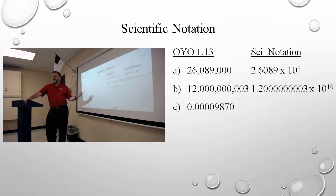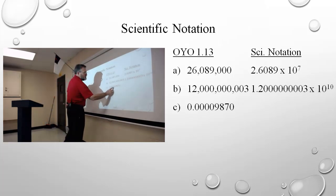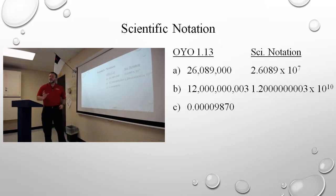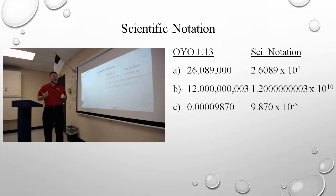Third: the significant digits here, hopefully you see, are the 9, 8, 7, and 0. All the leading zeros are insignificant. So my answer would be 9.870 times ten to some exponent. And I need to move it one, two, three, four, five places, making the numbers appear larger. So I need to make the exponent smaller by 5. I start at 0 and I subtract 5, which gives me 9.870 times ten to the negative fifth.